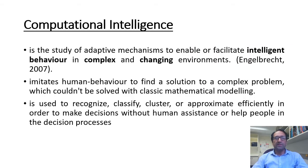Computational intelligence is defined as the study of adaptive mechanisms to enable or facilitate intelligent behavior in complex and changing environments. Computational intelligence tries to imitate human behavior and find solutions to complex problems which couldn't be solved with classic mathematical modeling.